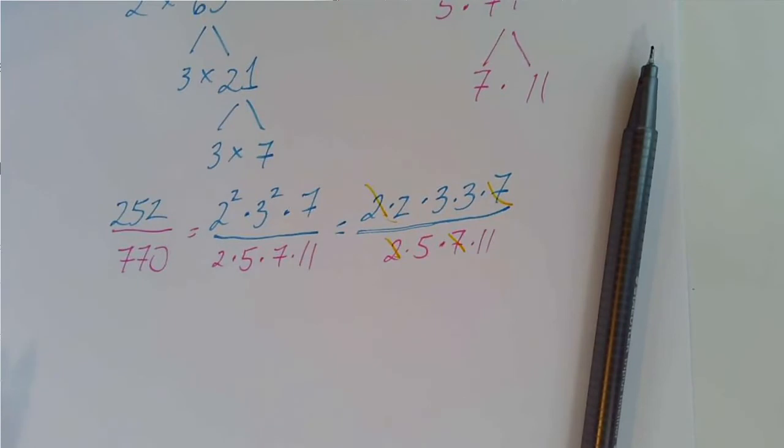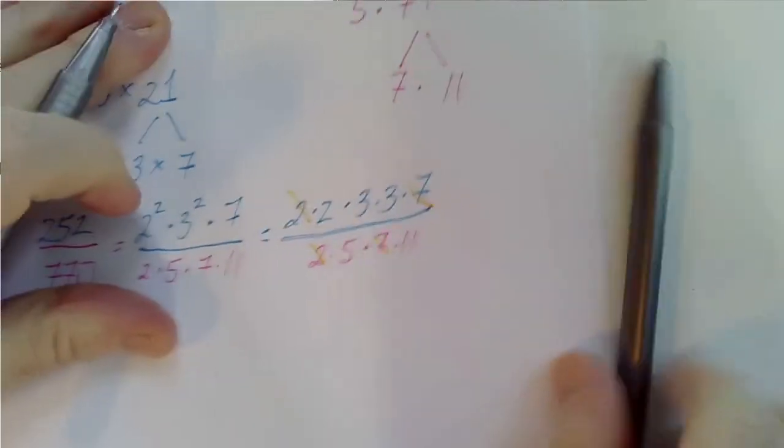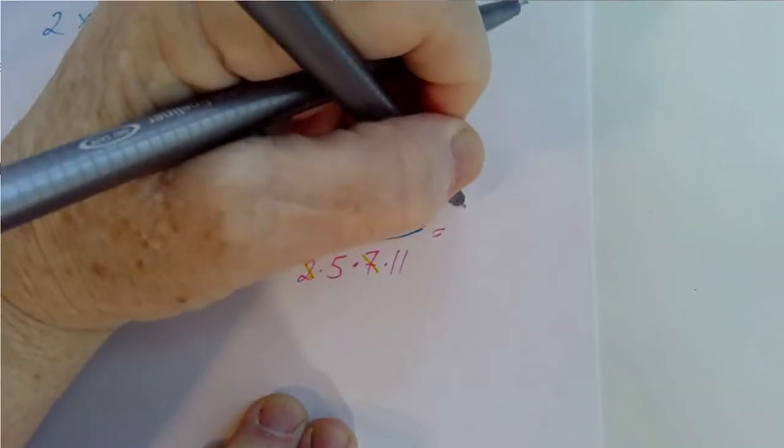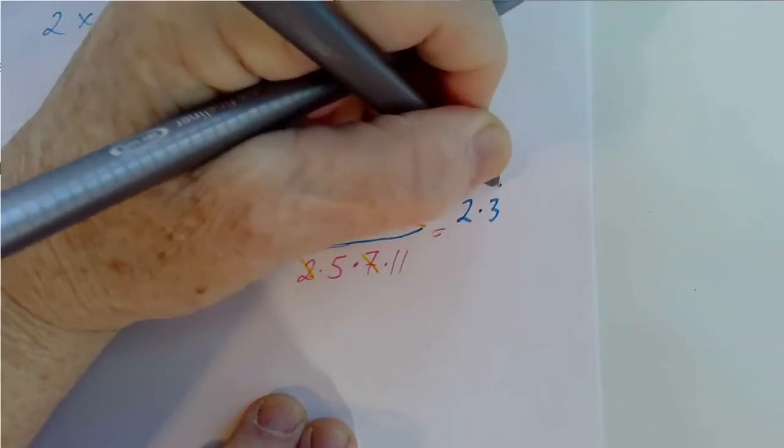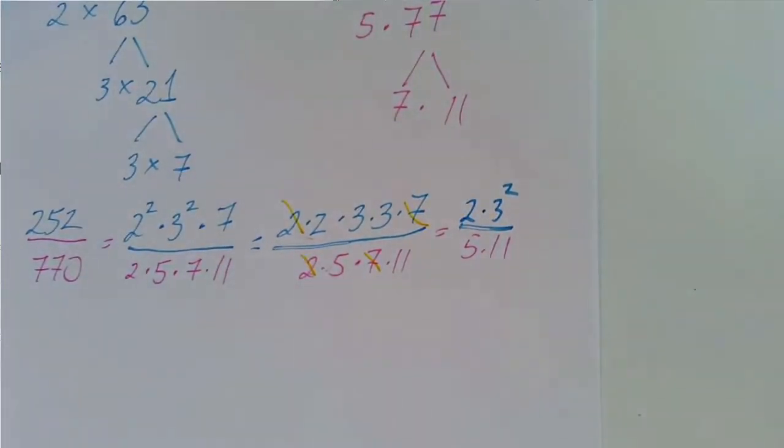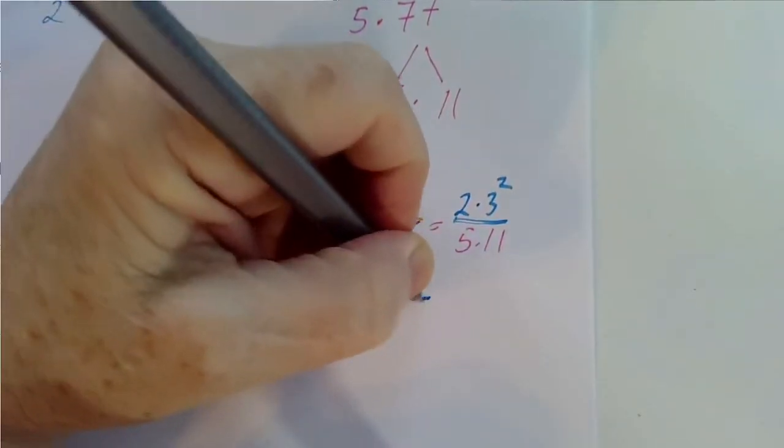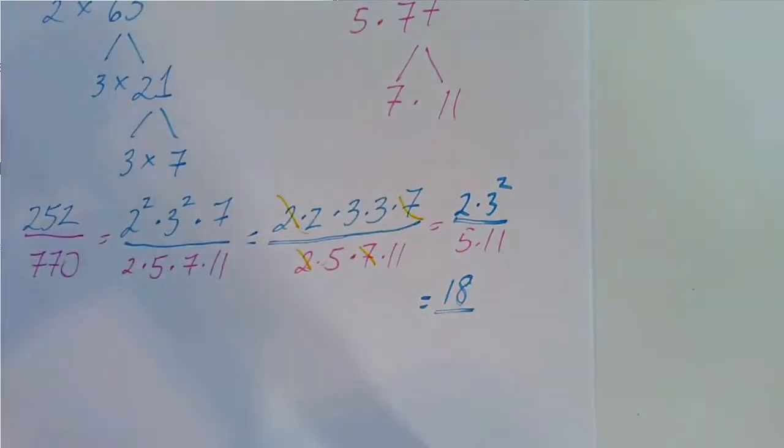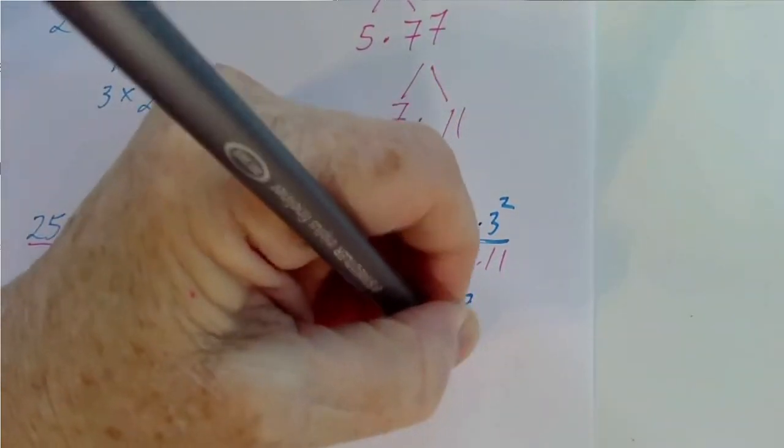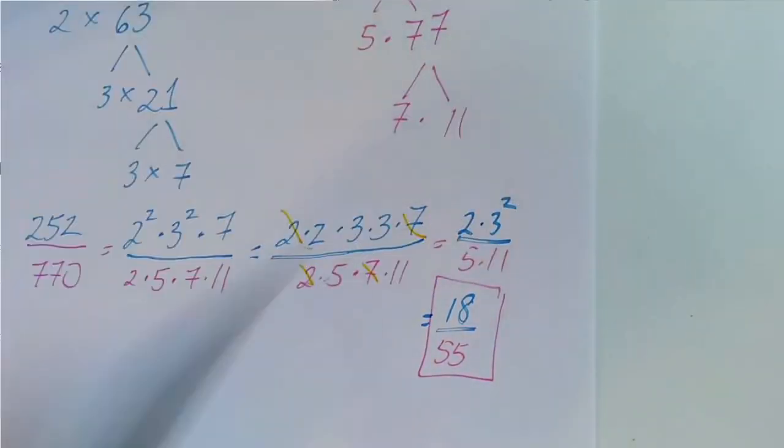In the numerator, we have 2 times 3 times 3. And in the denominator, we have 5 times 11. 3 squared is 9. 9 times 2 is 18. 5 times 11 is 55. And that's the answer.